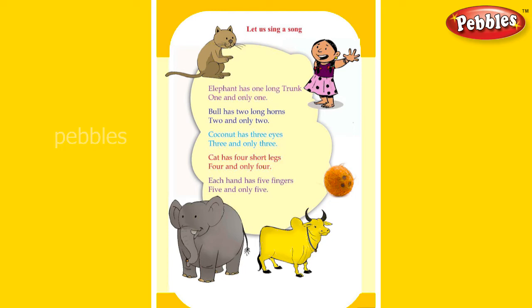Coconut has three eyes, three and only three. Cat has four short legs, four and only four.